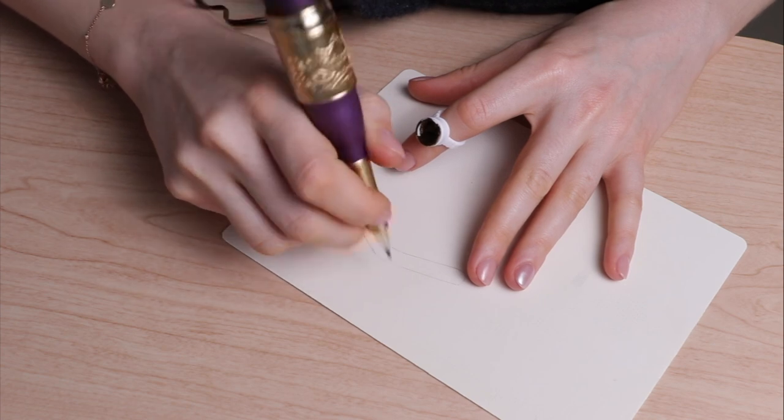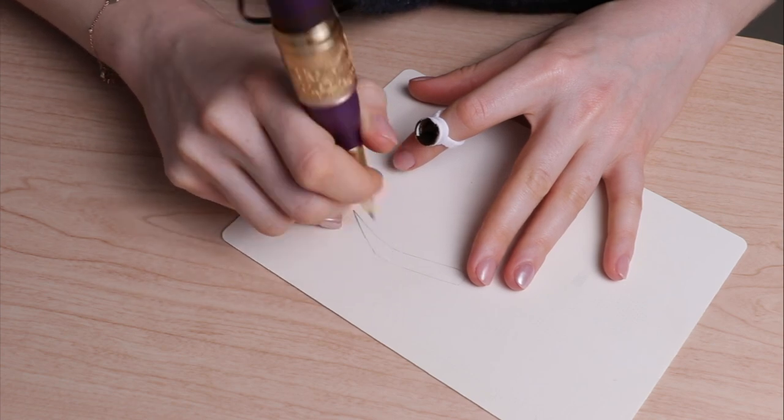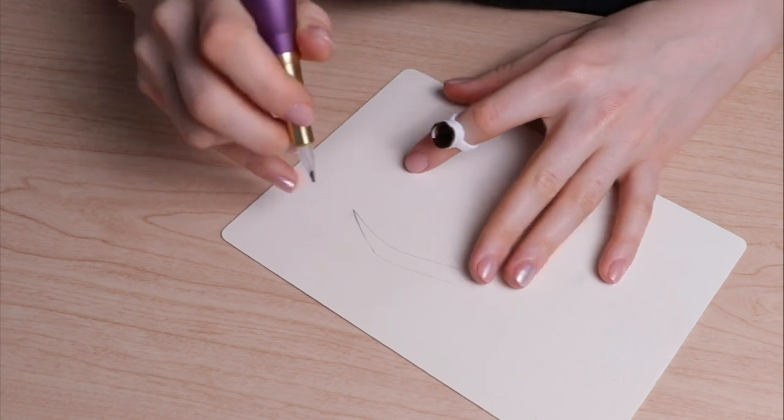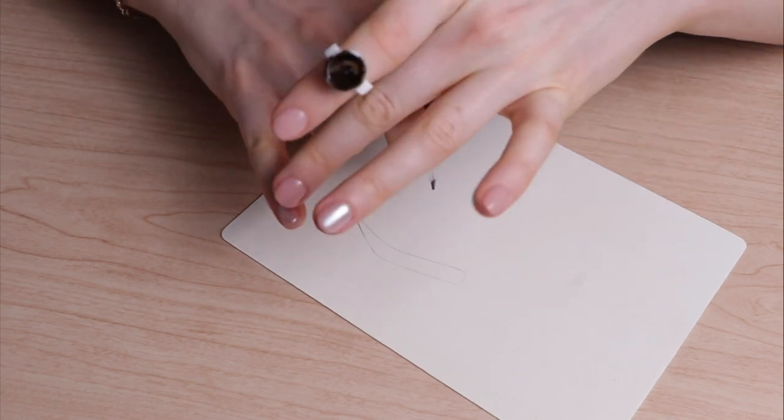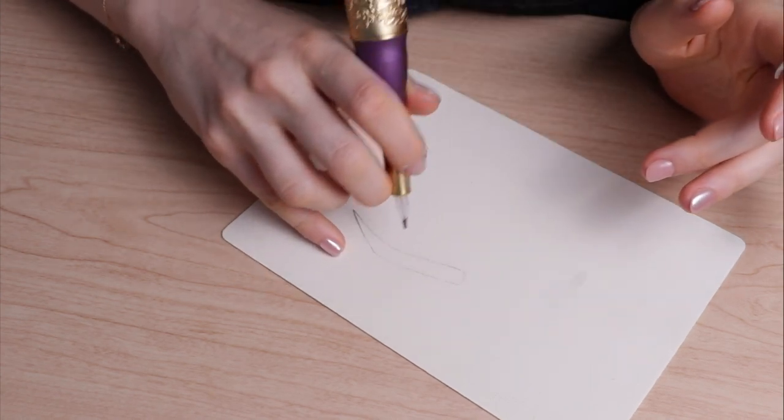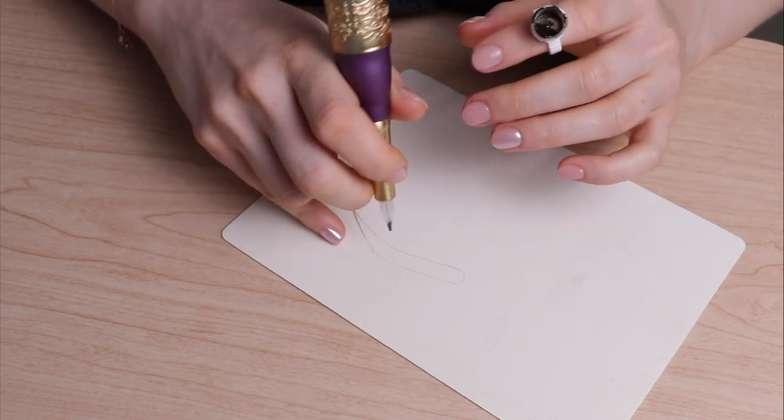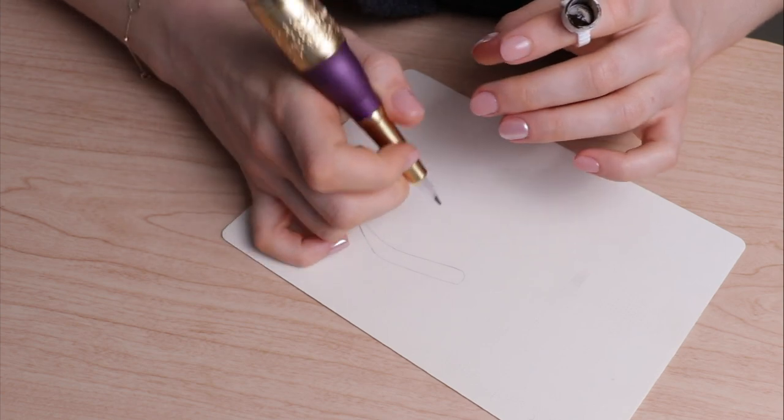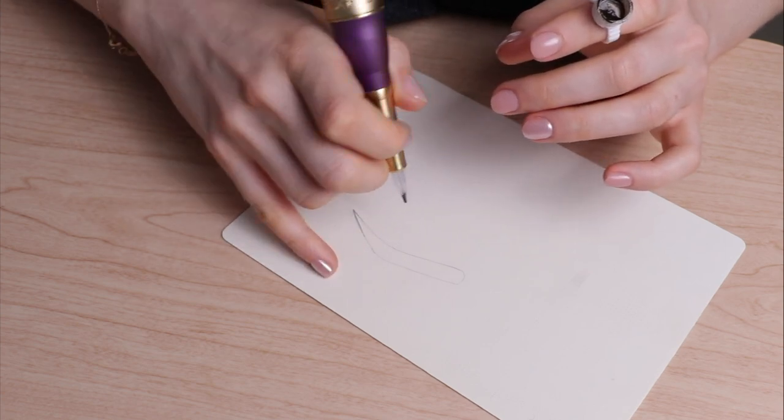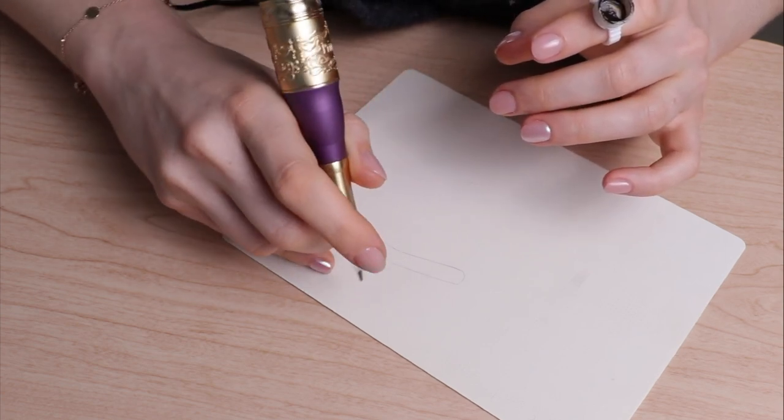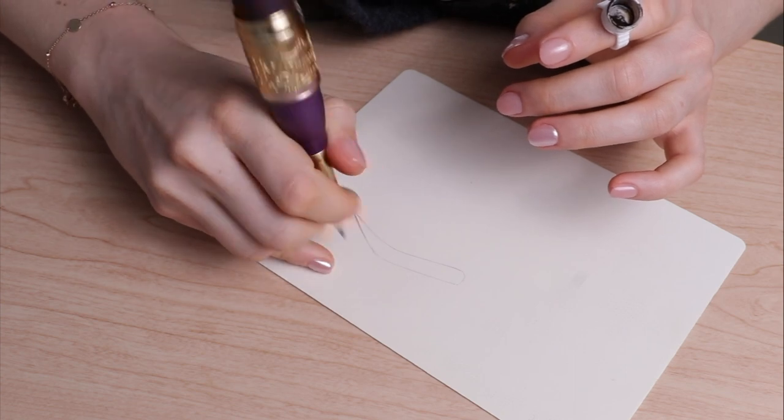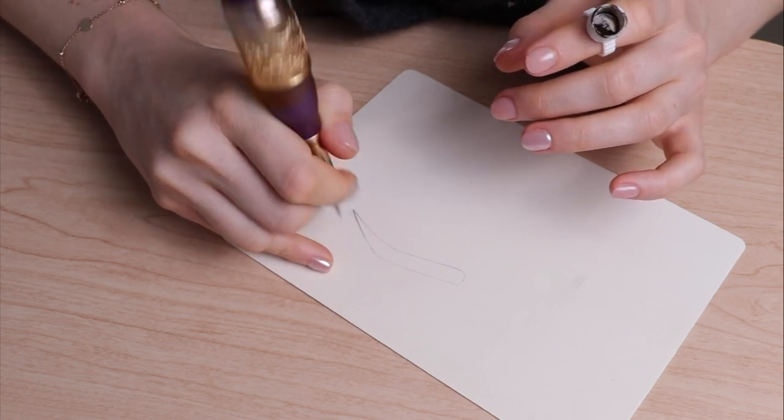This finger is placed on the skin of your client or on the latex, and it helps to stabilize your hand. Even more stable would be if you place it this way, and then this finger moves your machine.